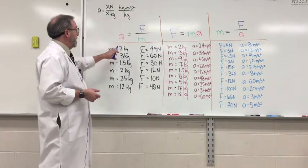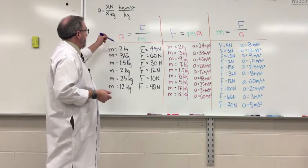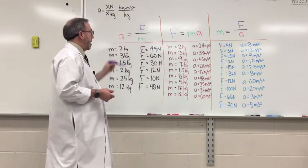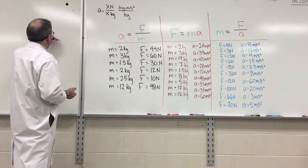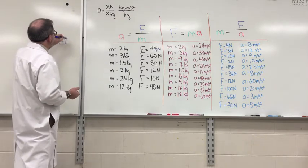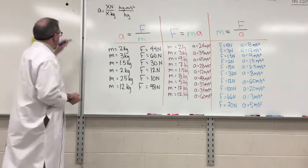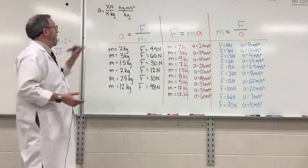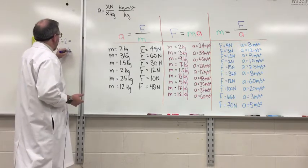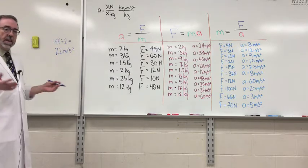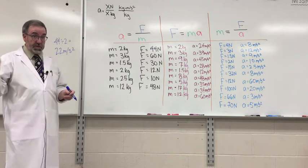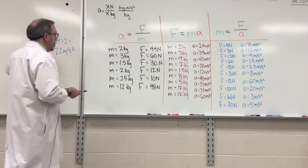So what we'll do is we're going to take 44 Newtons, which is the force up top, 44 Newtons divided by 2 kilograms. So you've got 44 divided by 2 equals, right, 22. 22 what? I set it up there. Meters per second squared. It's that easy. This is not rocket science. That's going to be Newton's third law. So let's do another one here.